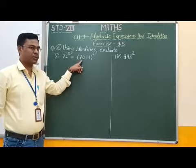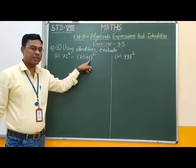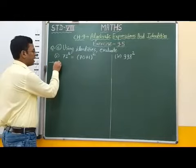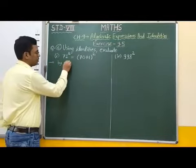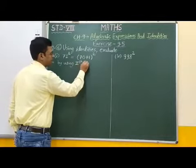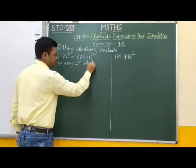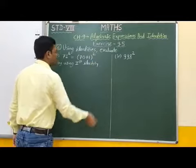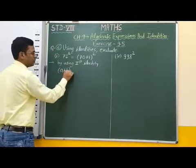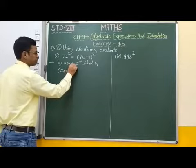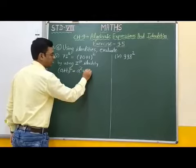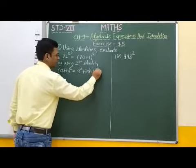Here a is equal to 70 and b is equal to 1. Therefore we can write this by using the first identity, which is: a plus b, whole bracket squared, is equal to a squared plus 2ab plus b squared.